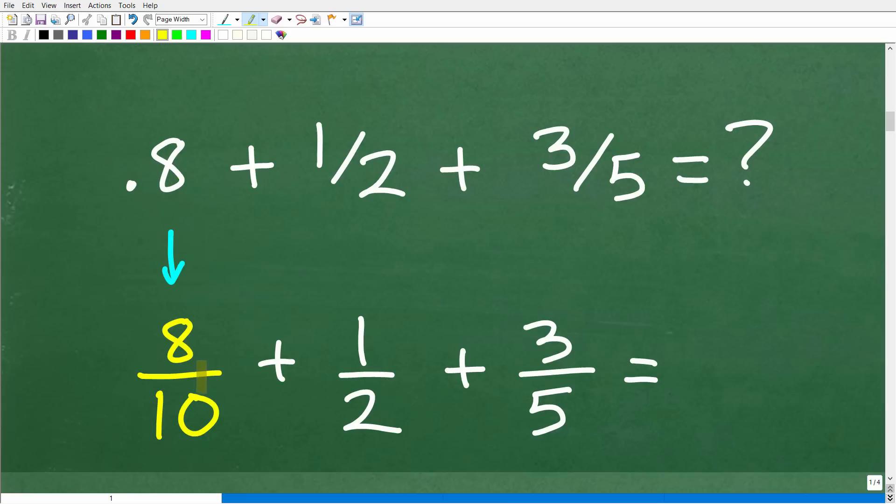0.8 is equivalent to 8 tenths plus 1 half plus 3 fifths. How do we add fractions? Well, you can't add or subtract fractions unless the denominators are all the same. We have 10 here, 2 here, and 5 here. We have to get all these denominators to be the same number.